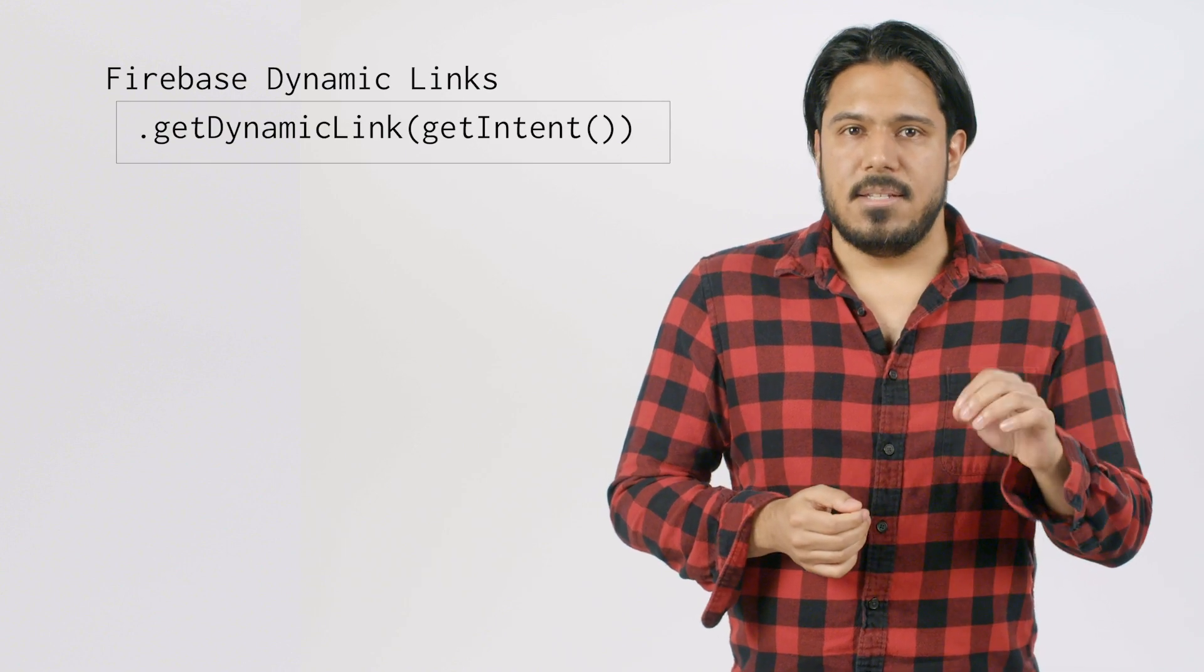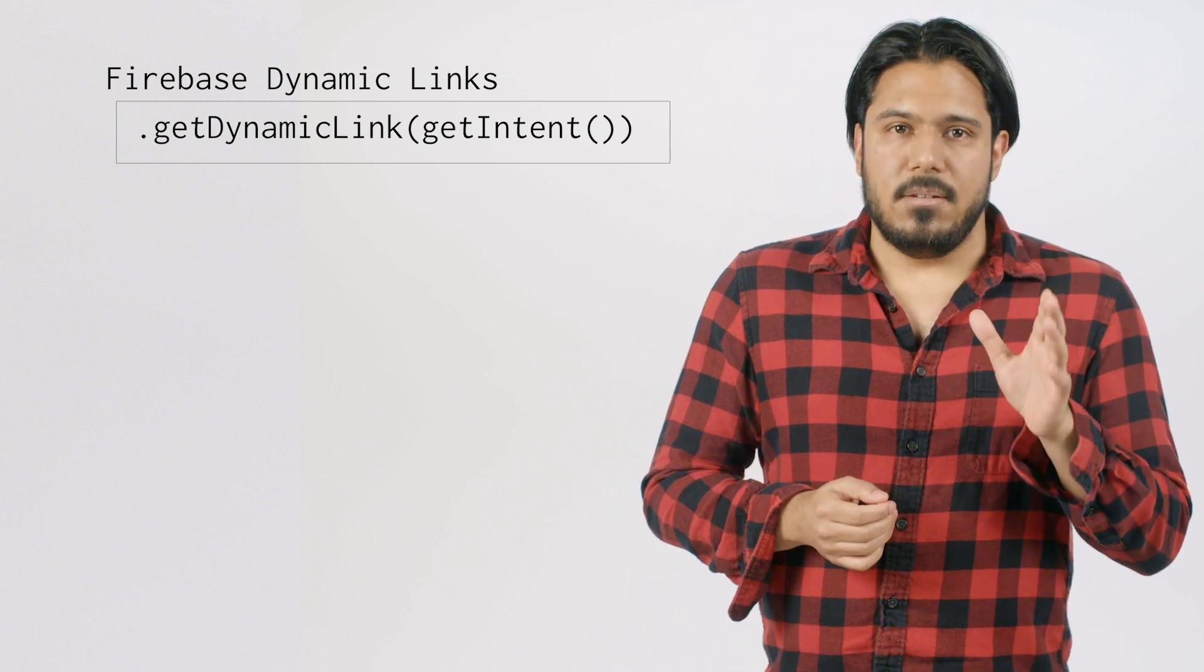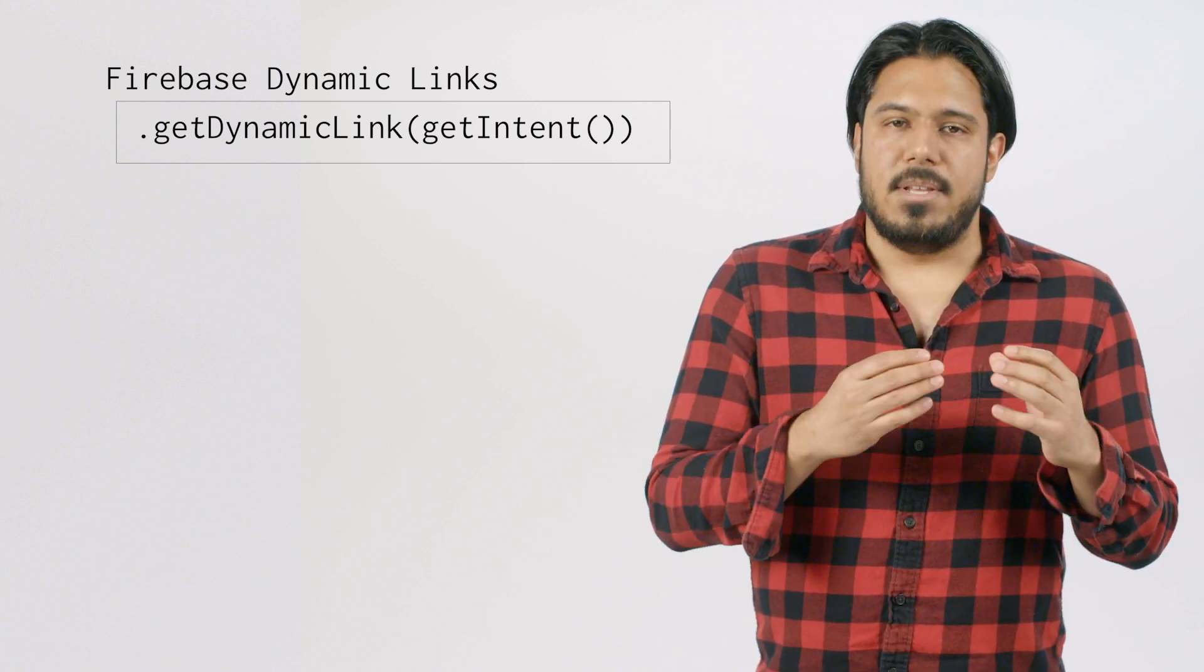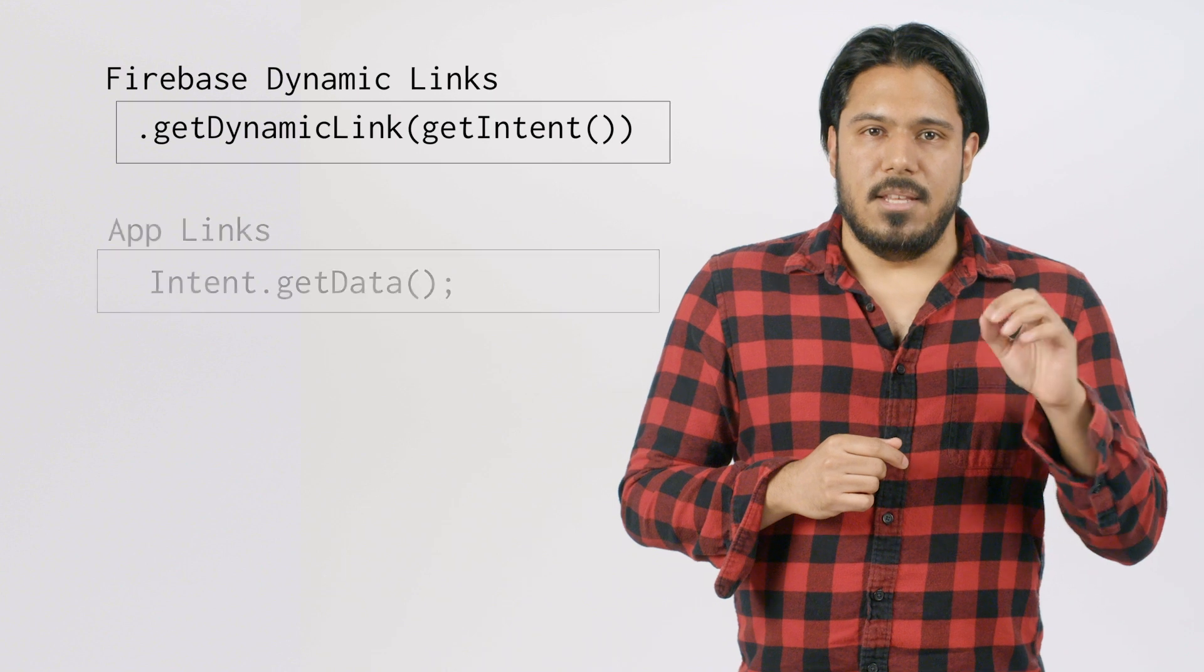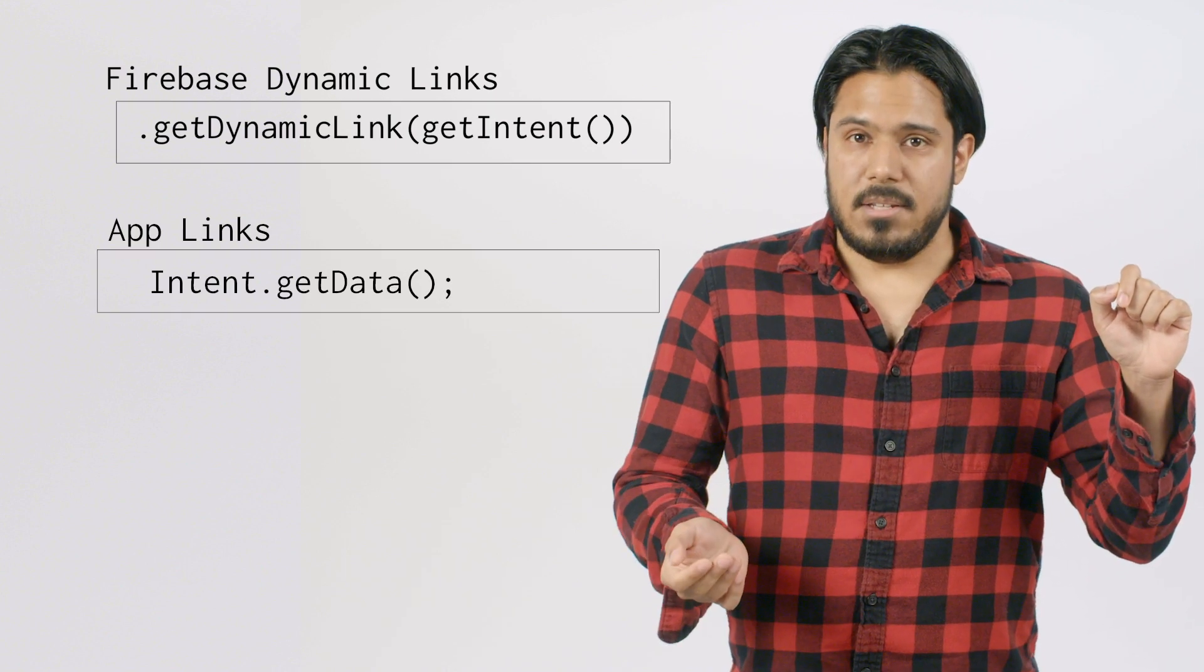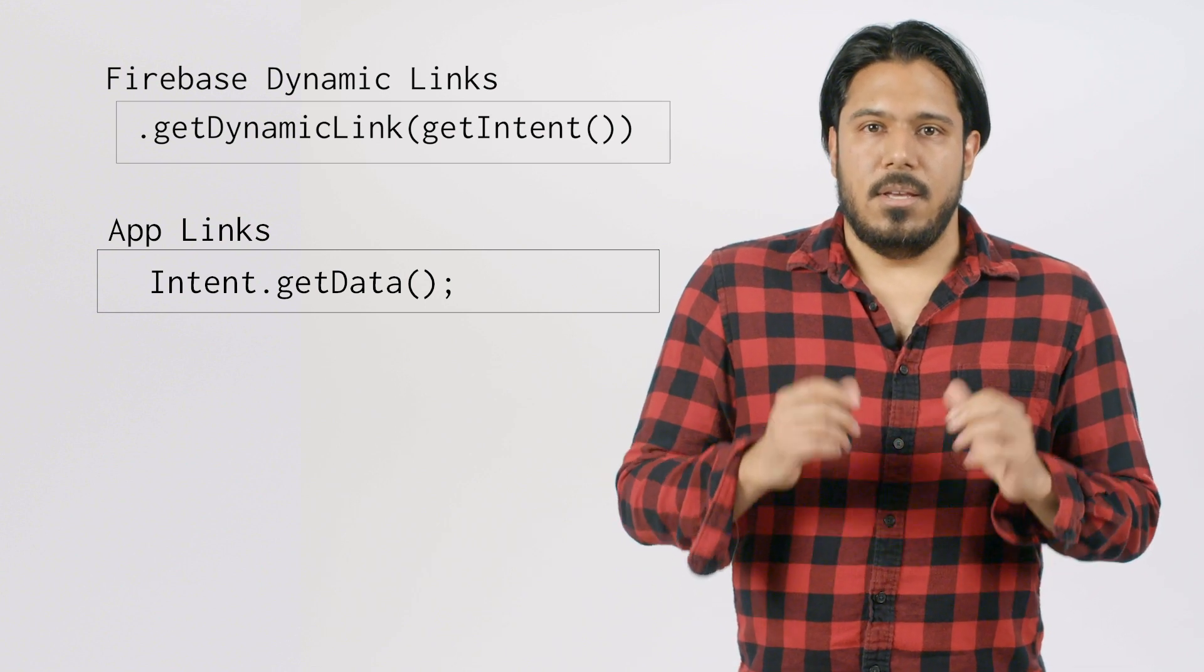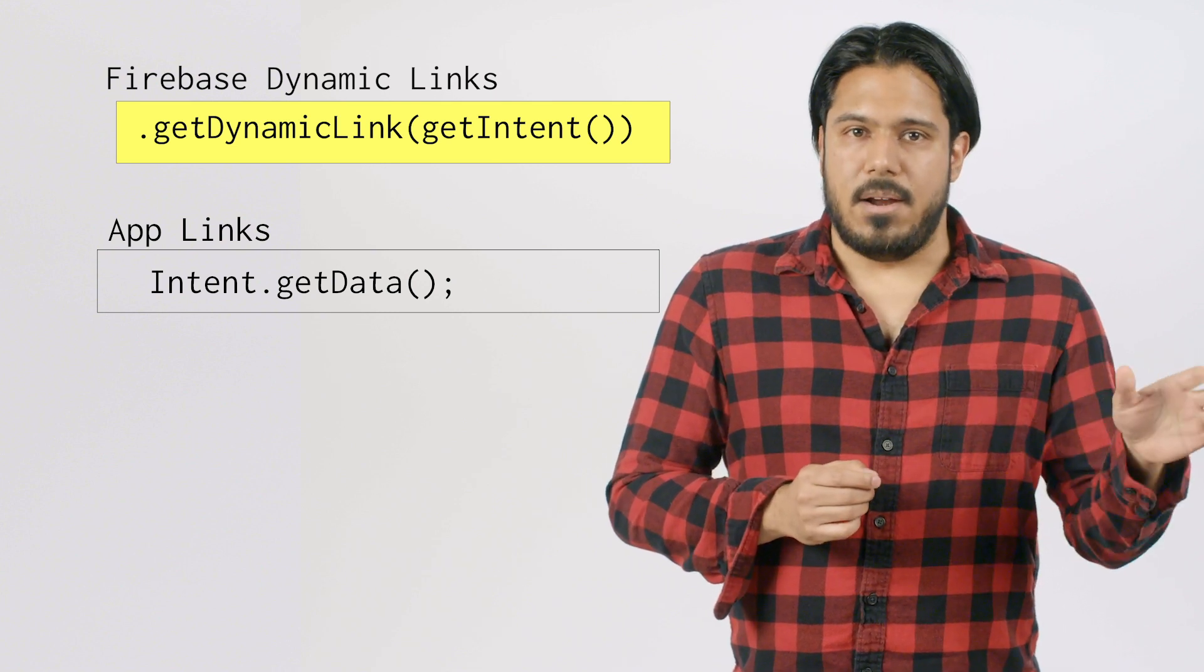And that's it. To receive the dynamic link data, you'll still need to make the Firebase dynamic links SDK calls as we did earlier. That is the FirebaseDynamicLinks.getInstance.getDynamicLink method calls that we put earlier. And that's because we may still need to convert a short link into the expanded URL. And we also want to track the analytics data for this Firebase dynamic links click event.